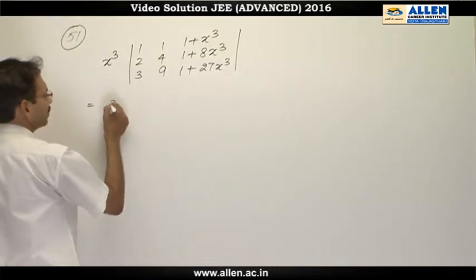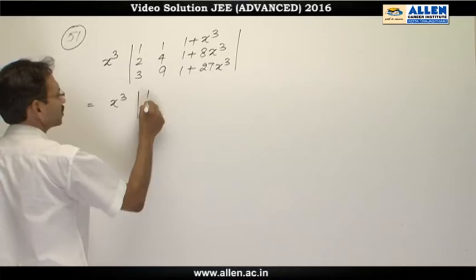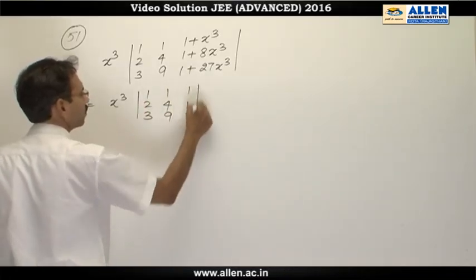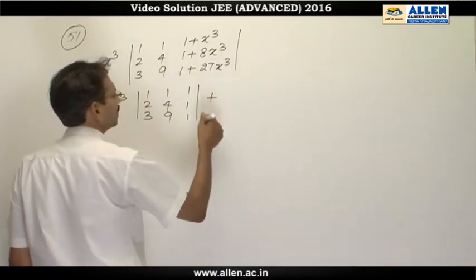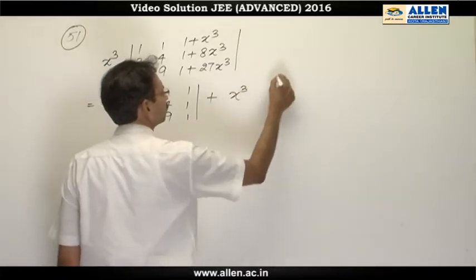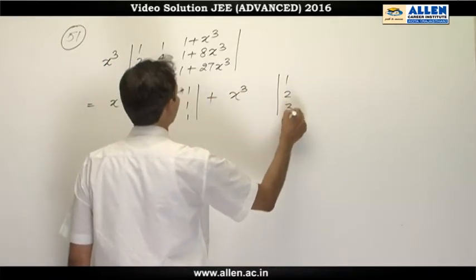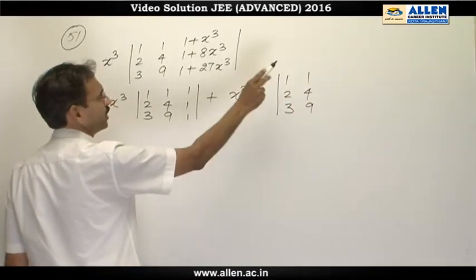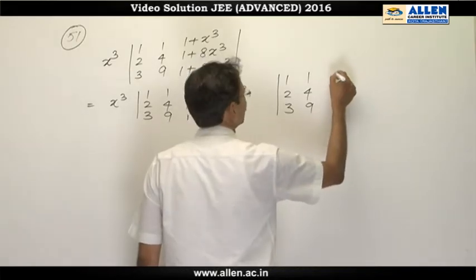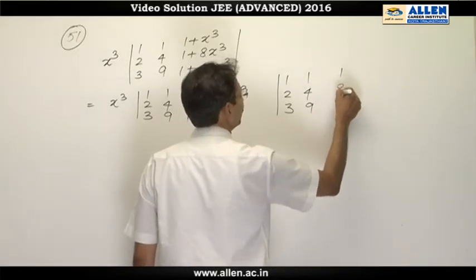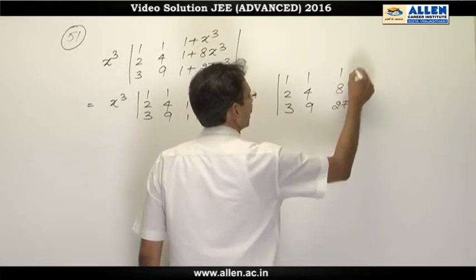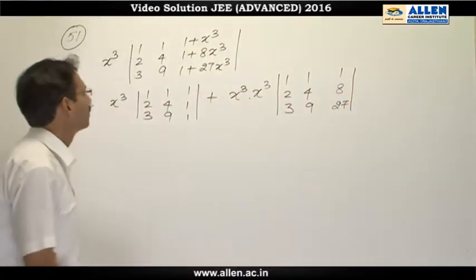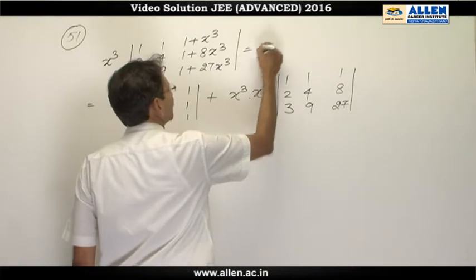Now we will break this determinant as a sum of two determinants. The first is x cube times the determinant: 1, 2, 3; 1, 4, 9; 1, 1, 1. Plus the second is x cube times the determinant: 1, 2, 3; 1, 4, 9; x cube, 8x cube, 27x cube. We can take x cube as common and this is given as 10.